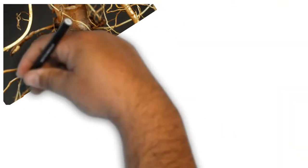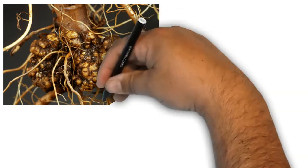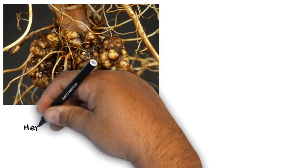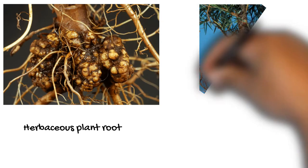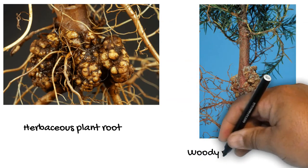Here are a few other examples. So here are herbaceous roots that you can see on your left. And on your right, there is a woody plant of juniper. And you can see aerial gall on it.